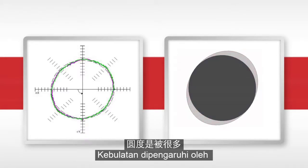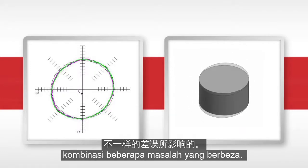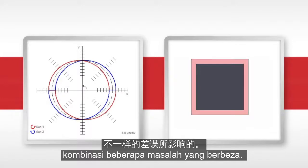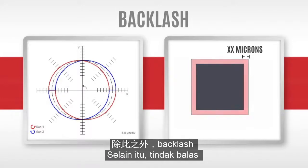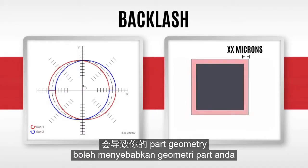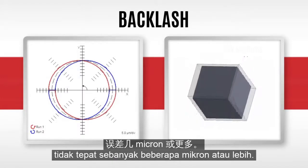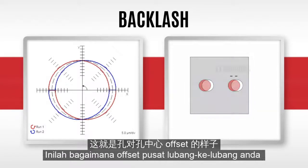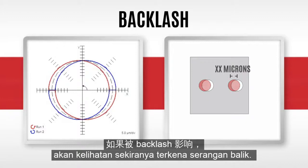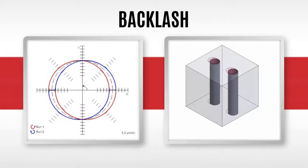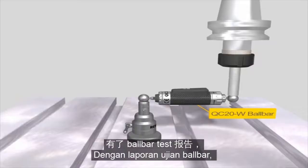Circularity is affected by a combination of many different errors. Besides that, backlash can cause your part geometry to be inaccurate by a few microns or more. And this is what your hole-to-hole center offset would look like if it was affected by backlash.